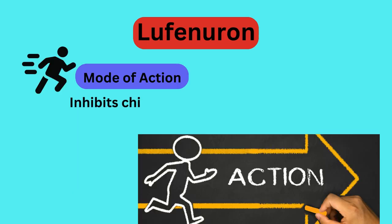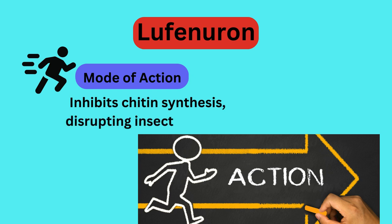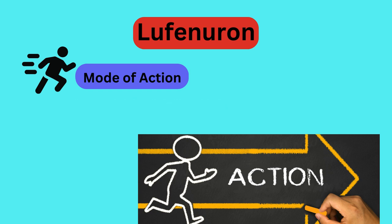Mode of action: Lufenuron disrupts the synthesis of chitin in insects, inhibiting their ability to molt. It acts as a chitin synthesis inhibitor, preventing the formation of the insect's exoskeleton during the molting process.